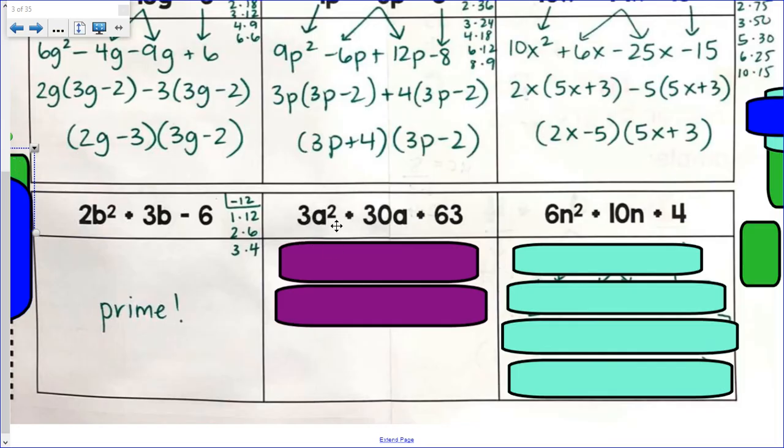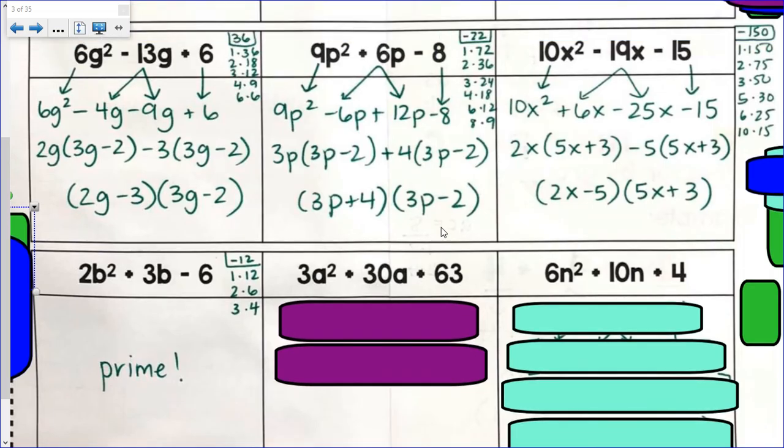Next one. 3a² plus 30a plus 63. Now, something I need to mention, and it really is important for these last two, is that before we go through this process, we kind of need to check to see if there's a GCF. It kind of makes our life a little easier.